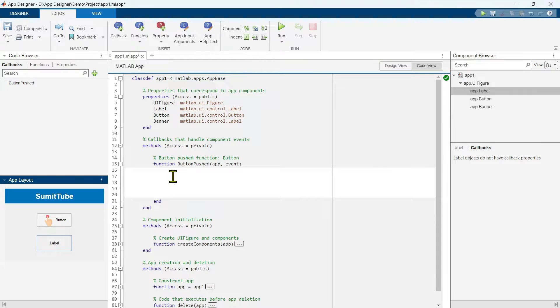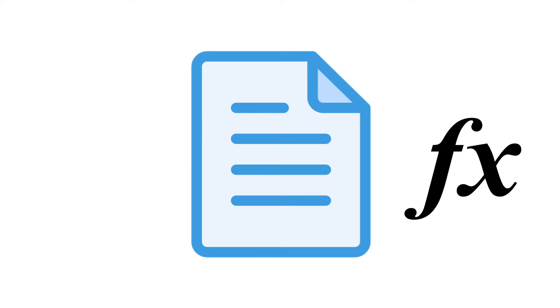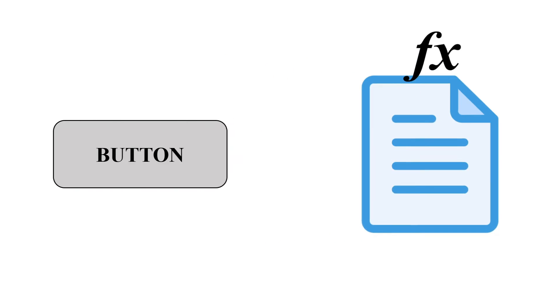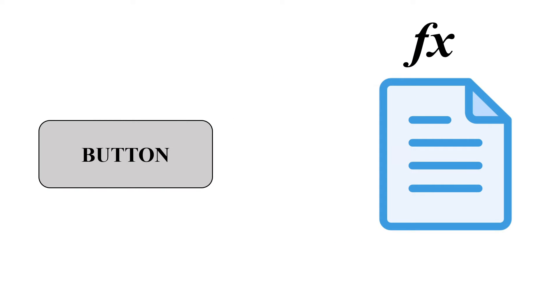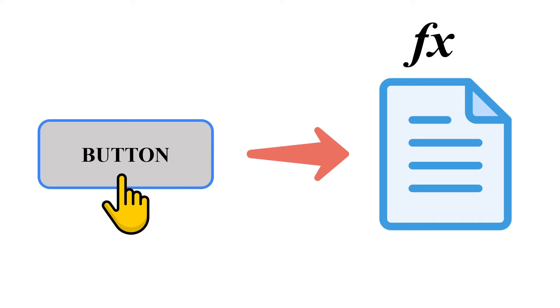Now it's time to write some functions. A function is a block of code that performs a specific task. A callback function is a special type of function which is associated with a specific component, like a button. Every time the user interacts with the component, this function will be called back — hence they are known as callback functions. For example, if a user clicks on the button, this function will be executed.